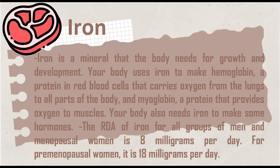Next is iron. Iron is a mineral that the body needs for growth and development. Your body uses iron to make hemoglobin, a protein in red blood cells that carries oxygen from the lungs to all parts of the body, and myoglobin, a protein that provides oxygen to muscles. Your body also needs iron to make some hormones. The RDA of iron for all groups of men and menopausal women is 8 mg per day, and for premenopausal women is 18 mg per day.